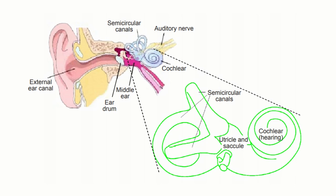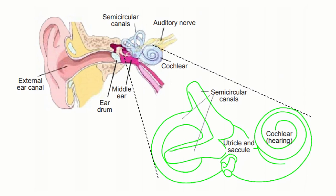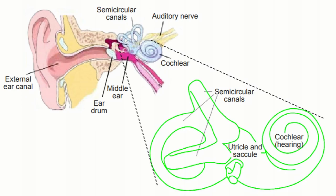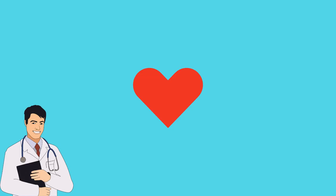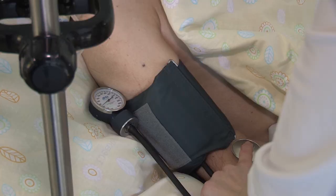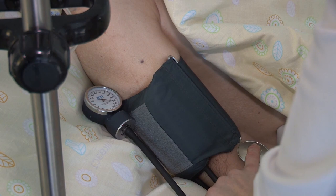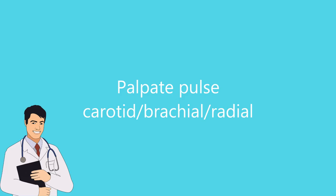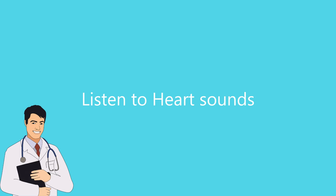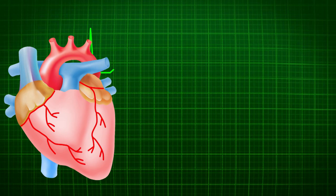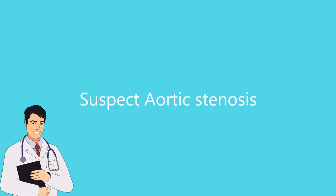When you perform the Dix-Hallpike examination, the patient might feel dizzy when they turn their head to one side, and you might also observe nystagmus. You might also look in the patient's ears using your otoscope. For cardiovascular examination, check the blood pressure sitting and standing to look for signs of postural hypertension. Palpate the pulse to check how strong it is and whether it is regular or irregular. Listen to the heart to check for any murmur — for example, a systolic murmur — as aortic stenosis could cause dizziness.